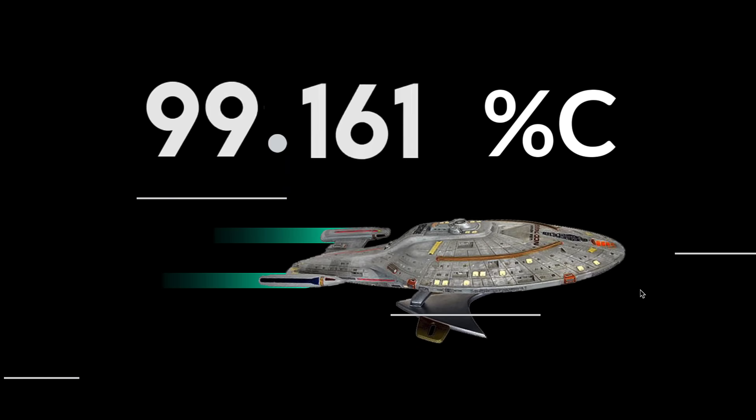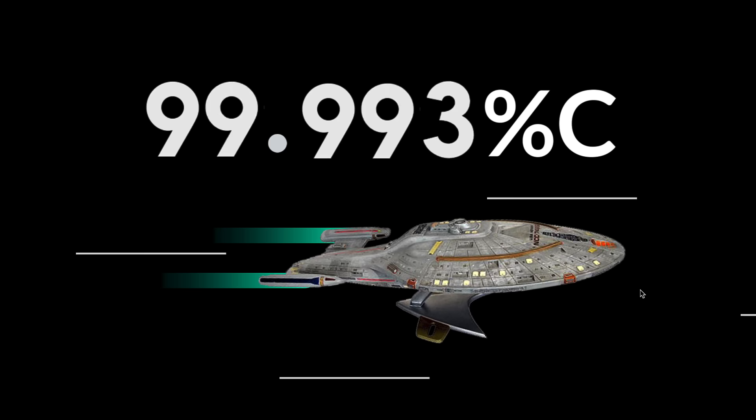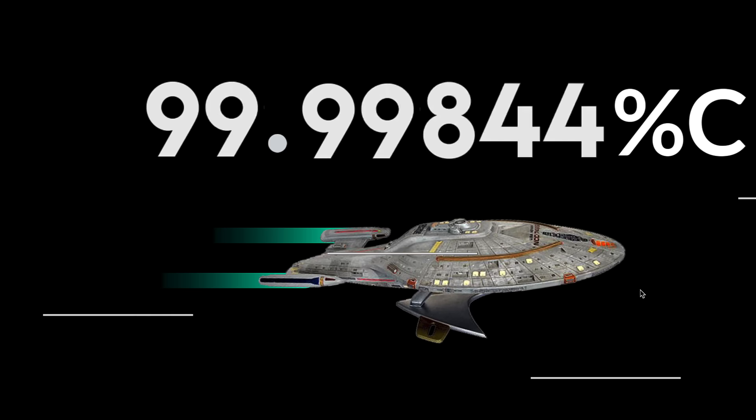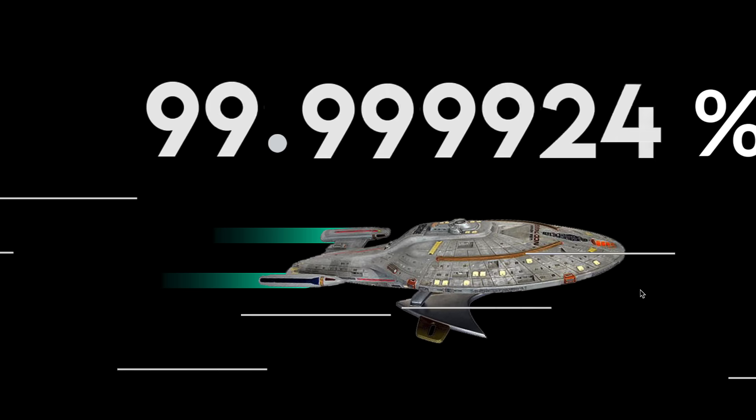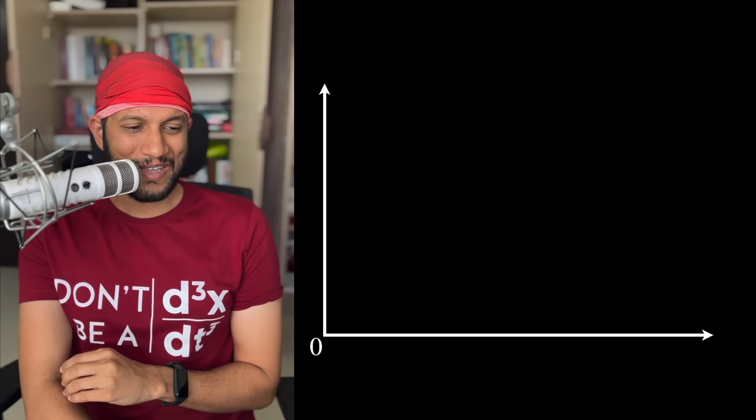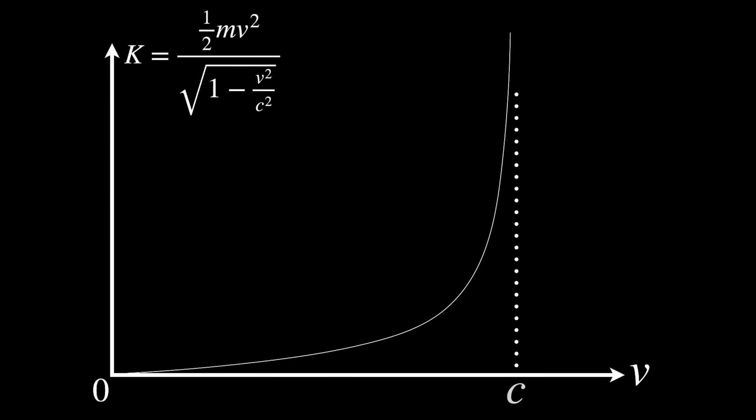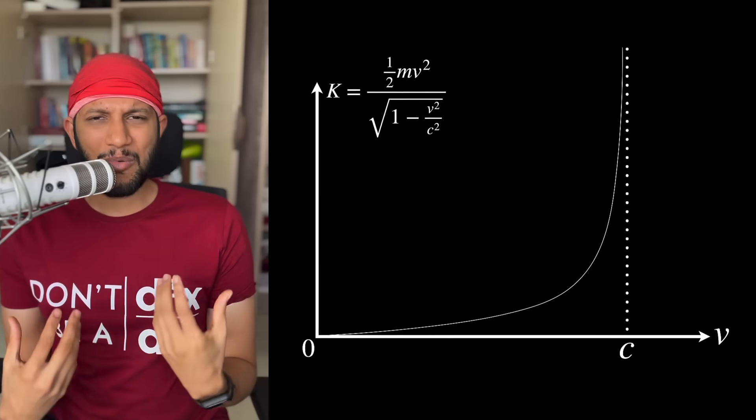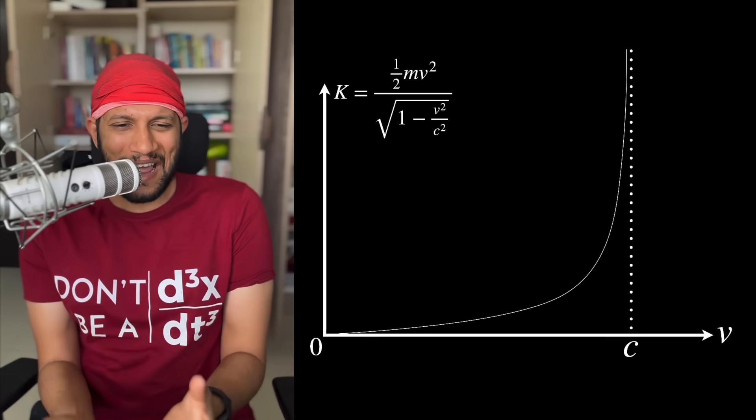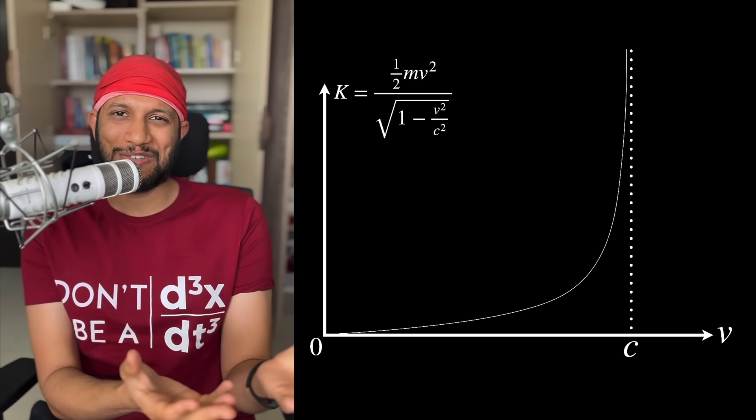Why can't you ever accelerate any object to the speed of light? I mean, we can go very close, but we can never reach the speed of light. Why is that? The most common explanation is if you take the graph of kinetic energy versus speed, as the speed approaches C, kinetic energy goes to infinity, so it takes infinite energy. But my problem is that's not an explanation. I don't have an intuition behind why that is true.